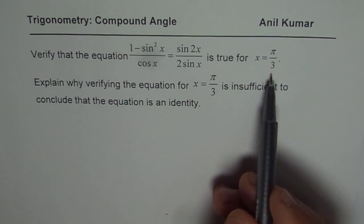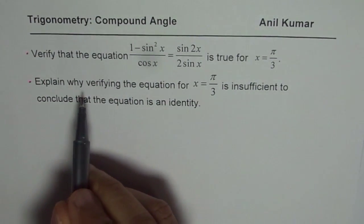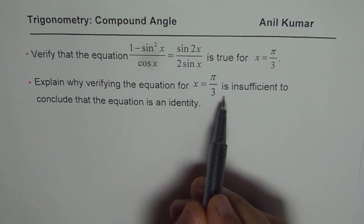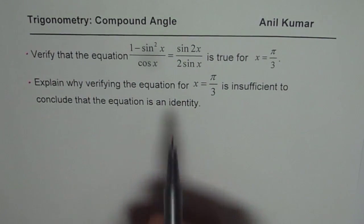That is the first part. The second part of this question is: explain why verifying the equation for x = π/3 is insufficient to conclude that the equation is an identity.